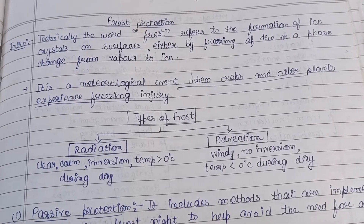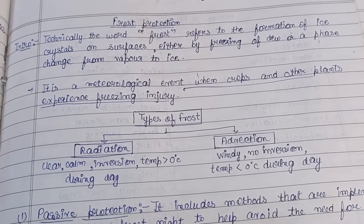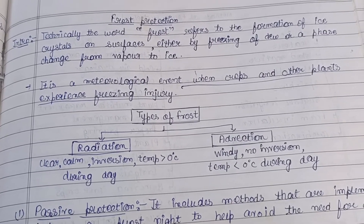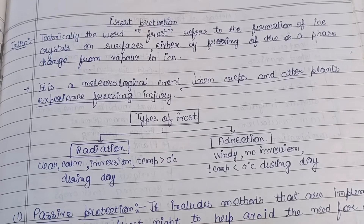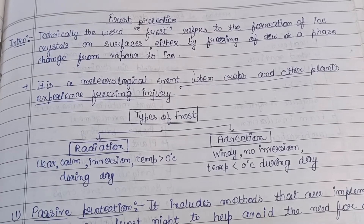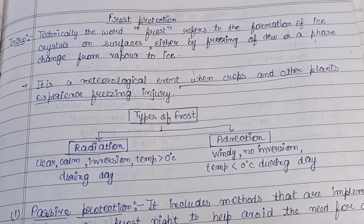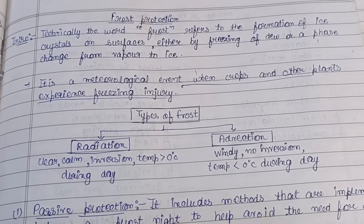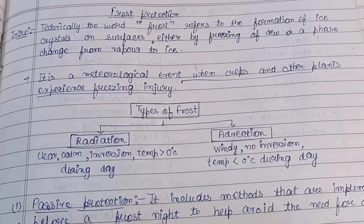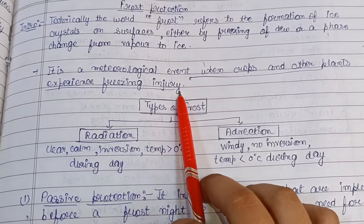Welcome back to the channel. Today's topic is frost protection — how we can protect plants from frost, which is a meteorological event. Technically, frost refers to the formation of ice crystals on a surface, either by freezing or a phase change from vapor to ice. In biology, it is a meteorological event when crops and other plants experience a freezing injury.